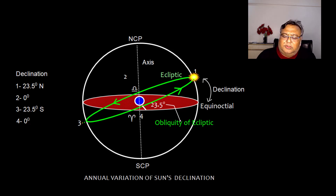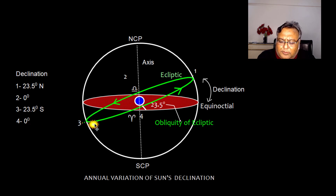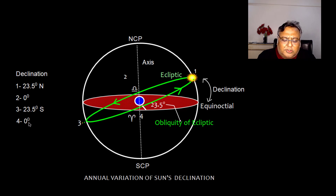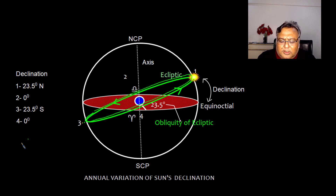Let us talk about the celestial sphere. Here the sun is moving apparently in a year — this is the apparent annual motion of the sun. The sun is at position 1, then 2, then 3, then 4, and keeps repeating. The equinoctial is the projection of the equator on the celestial sphere. The green color represents the plane of ecliptic, and the 23.5-degree angle is the obliquity of ecliptic, which depends on the tilt of the earth.